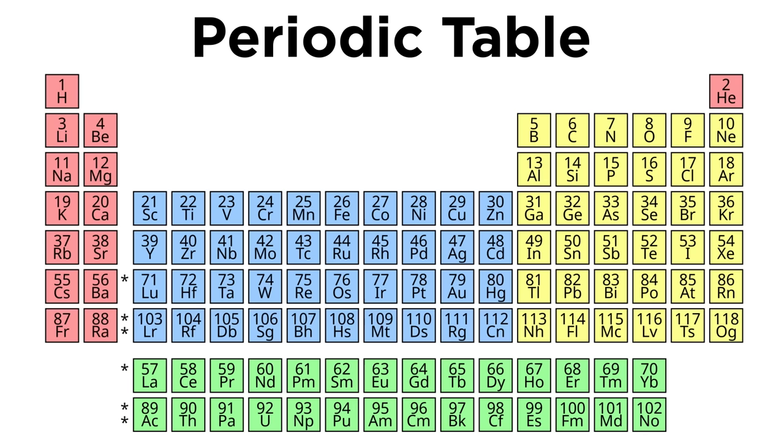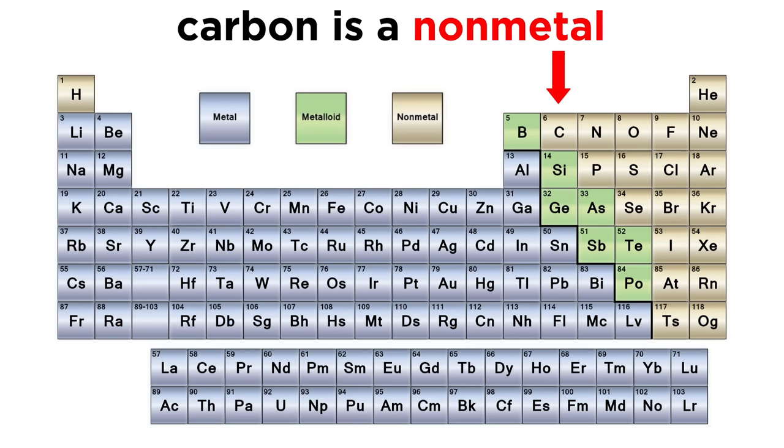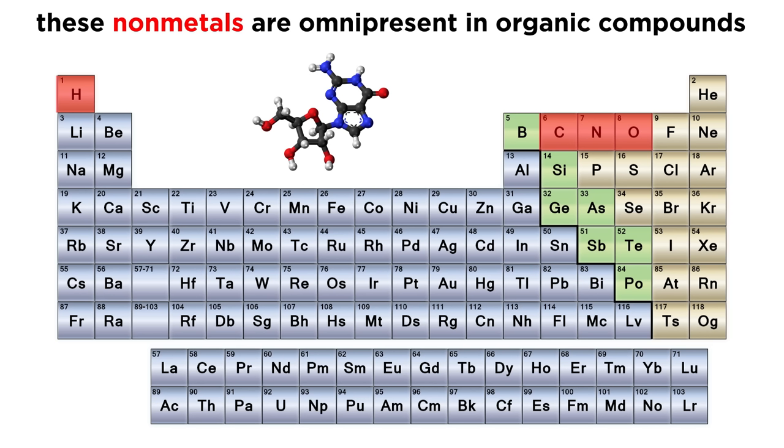So where does that leave us in terms of the periodic table? Well we know that carbon is a nonmetal, and nonmetals tend to make covalent bonds with other nonmetals. That's why the majority of organic compounds are comprised of carbon, hydrogen, oxygen, and nitrogen. It's just carbon and the elements carbon likes to bond with.